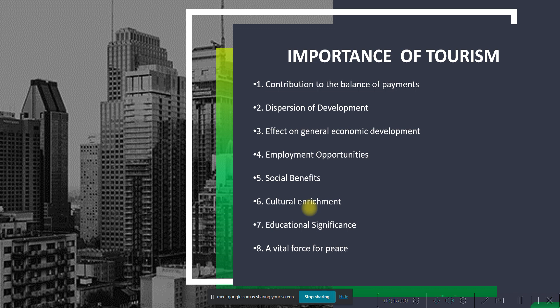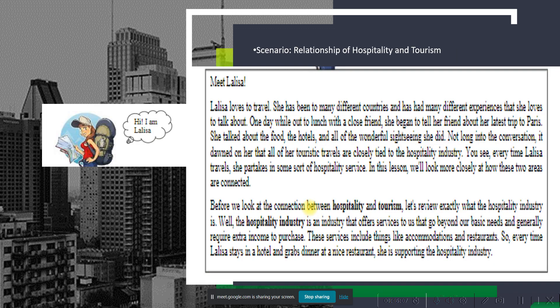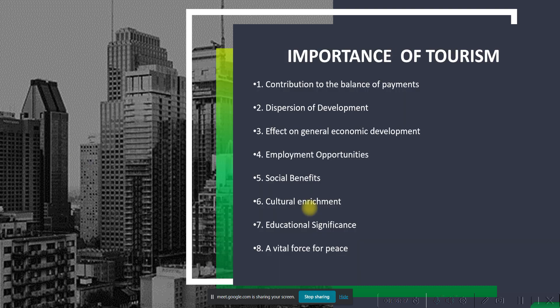Number seven is educational significance. Tourism and hospitality enhance one's education. International conferences, seminars, and study trips held each year enable people from all nations to exchange ideas, propose solutions to problems, and share their concerns. With tourism, you get to learn from people through workshops, collaborate and communicate with people from different countries and cultural backgrounds, and exchange ideas and brainstorm solutions together.